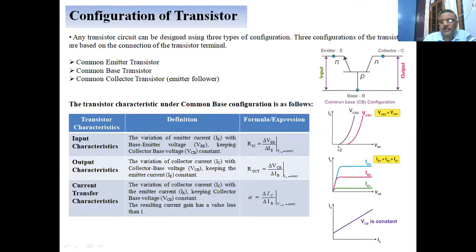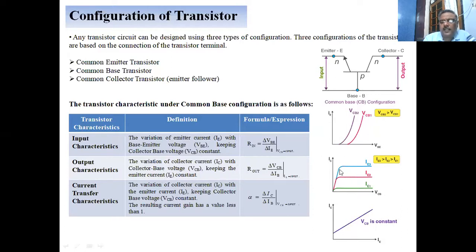For the output characteristic, the collector current is plotted with respect to the collector-base voltage, keeping the emitter current constant. In the input characteristics, the collector-base voltage is kept constant. In the output characteristic, we keep the emitter current constant and study the variation of the collector current by varying the collector-base voltage.